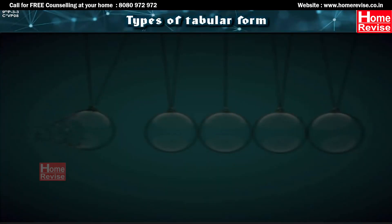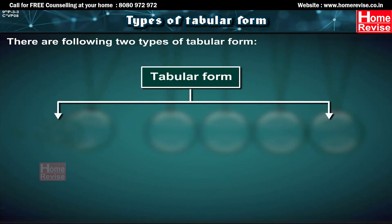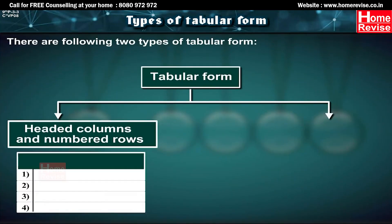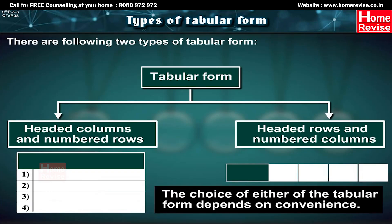There are two types of tabular form: one — headed columns and numbered rows, and two — headed rows and numbered columns. The choice of either tabular form depends on convenience.